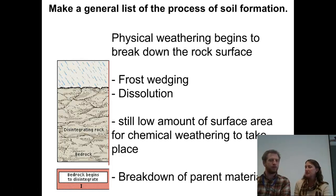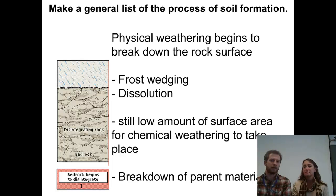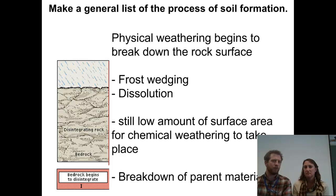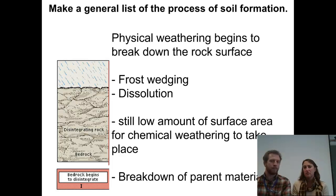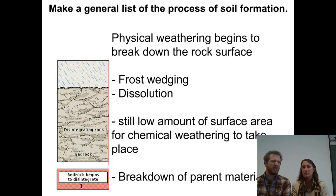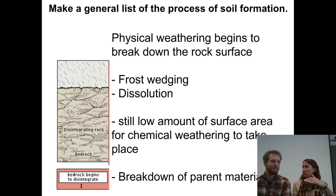Soils are not static, so they do evolve and change over time. We start with barren rock — freshly exposed rock. Think of a new volcanic island or a fresh rock exposure. Our first weathering is physical weathering: frost wedging and some dissolution. We've got low surface area, so not a lot of chemical weathering is taking place. It's still about the same composition all the way through — homogenous from top to bottom.